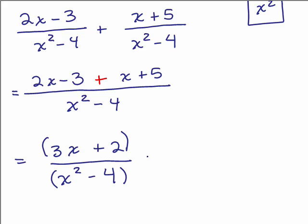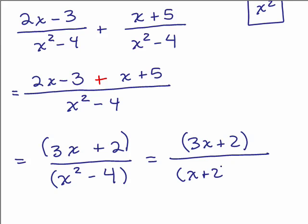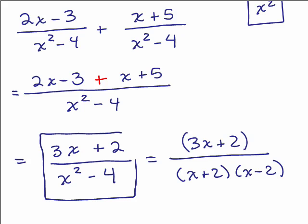If you can factor, do that. The numerator 3x plus 2 can't be factored — no common factor, not a difference of two squares. But the denominator can be factored. Look to see if there are any common factors to cancel — and there are none. So the answer can be left as 3x plus 2 over x squared minus 4, or written with the denominator factored. That's really up to the teacher.